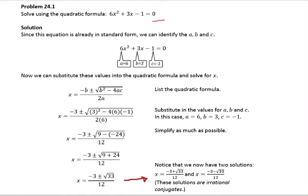what we will do at this step is split the solution into two parts, with the plus and minus separated. One of the solutions will be negative 3 plus square root of 33 over 12, and the other one will be negative 3 minus square root of 33 over 12.